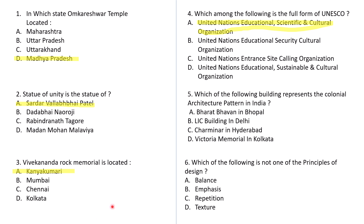This is very easy — the answer is A: United Nations Educational Scientific and Cultural Organization. Question number 5: Which of the following building represents the colonial architecture pattern in India? Option A: Bharat Bhavan in Bhopal. B: LIC building in Delhi. C: Charminar in Hyderabad. D: Victoria Memorial in Kolkata. The correct answer for this is D — Victoria Memorial in Kolkata.